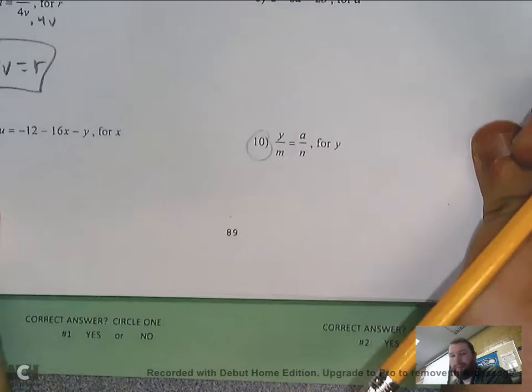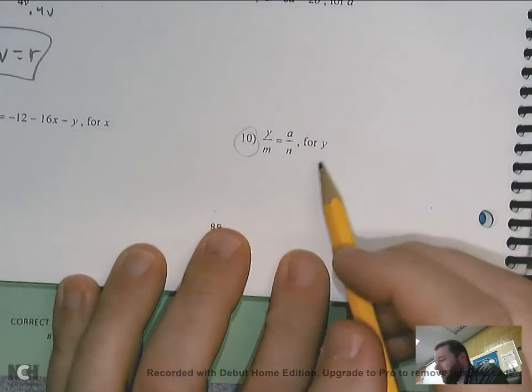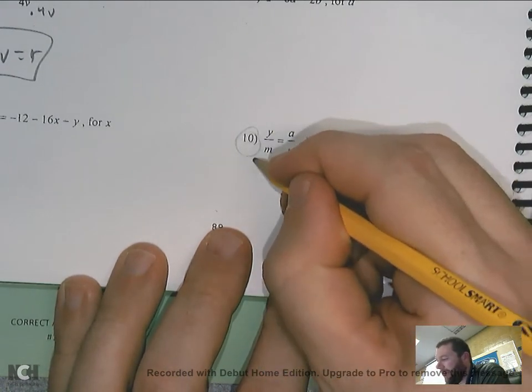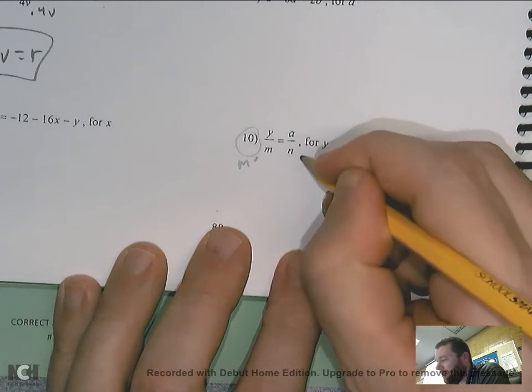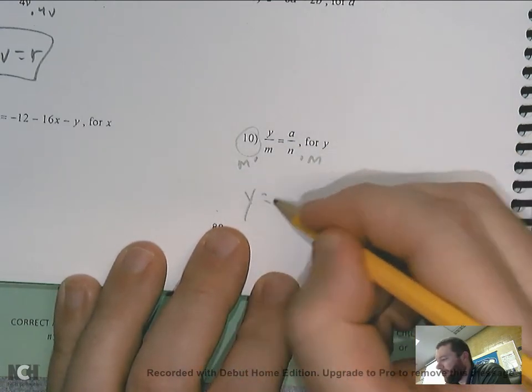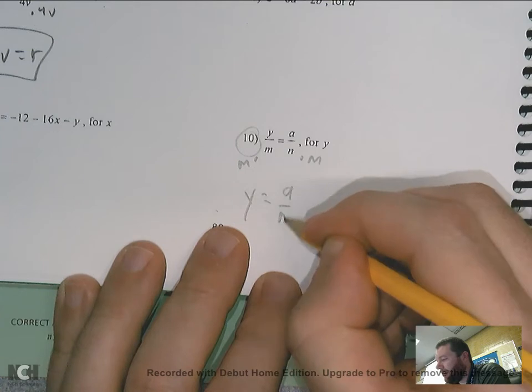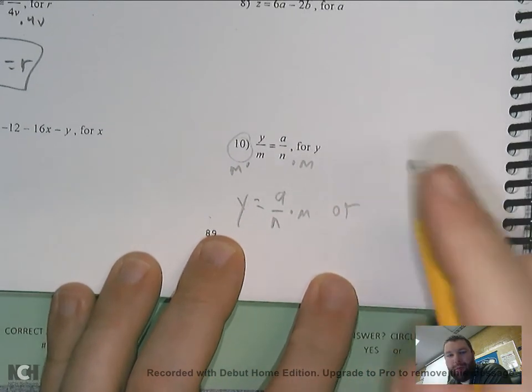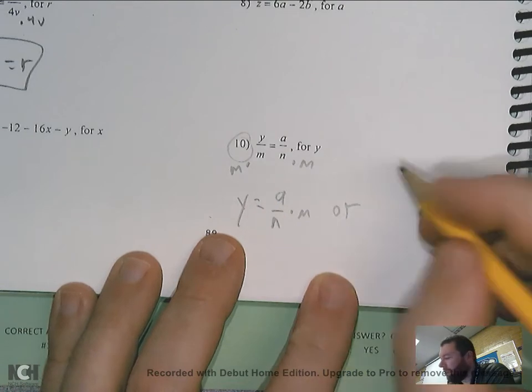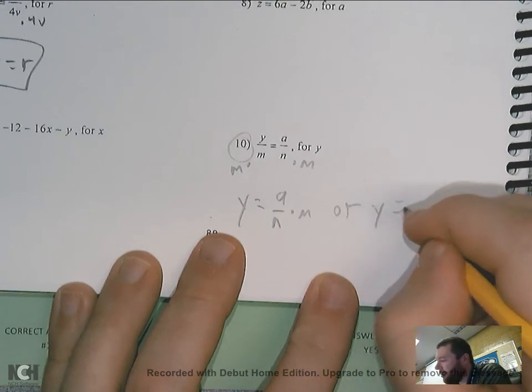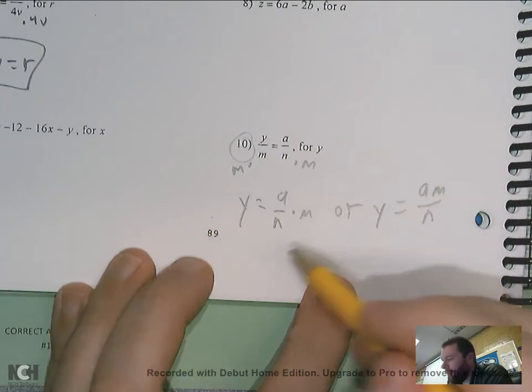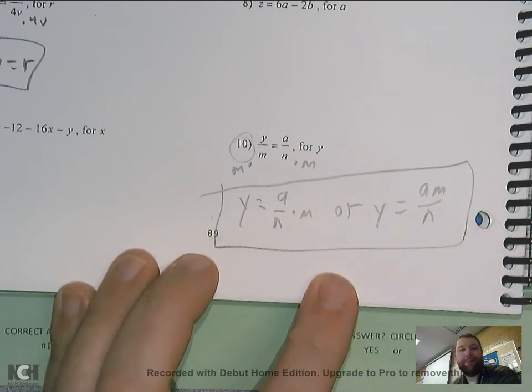Then number 10 wants me to solve for y. I have y over m. So I have to get rid of that m. It's dividing. So I have to multiply each side by m. So that would give me y is equal to a over n times m. Or I could write that—remember when you multiply a fraction, it just multiplies the top—I could write it as this: y equals am over n. Either would be correct. I would accept either answer.